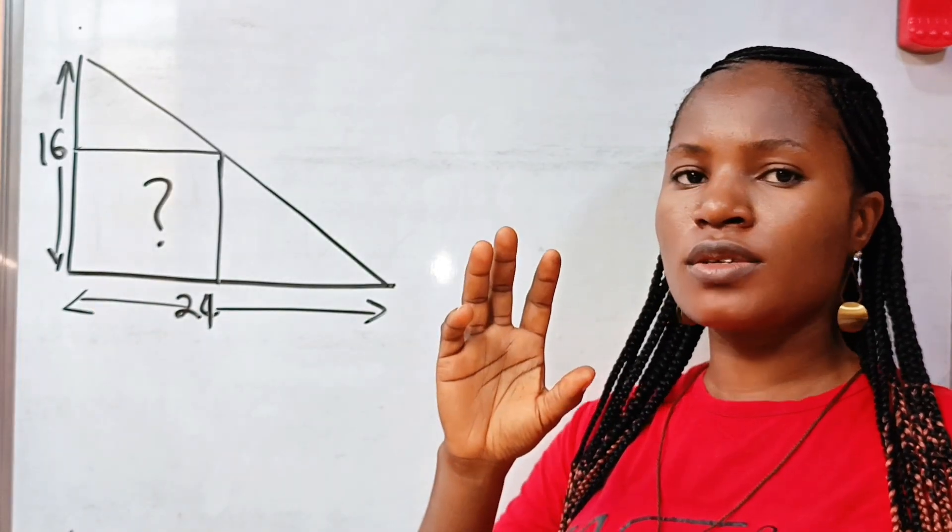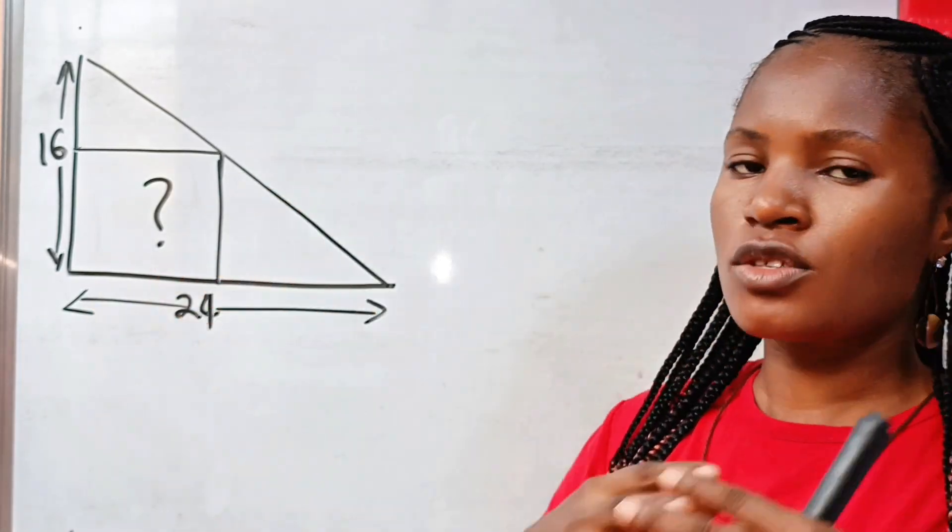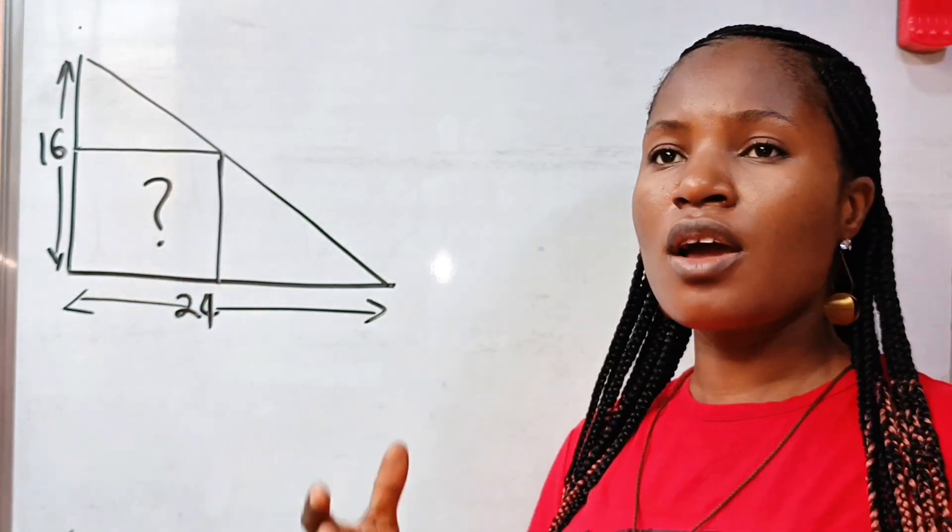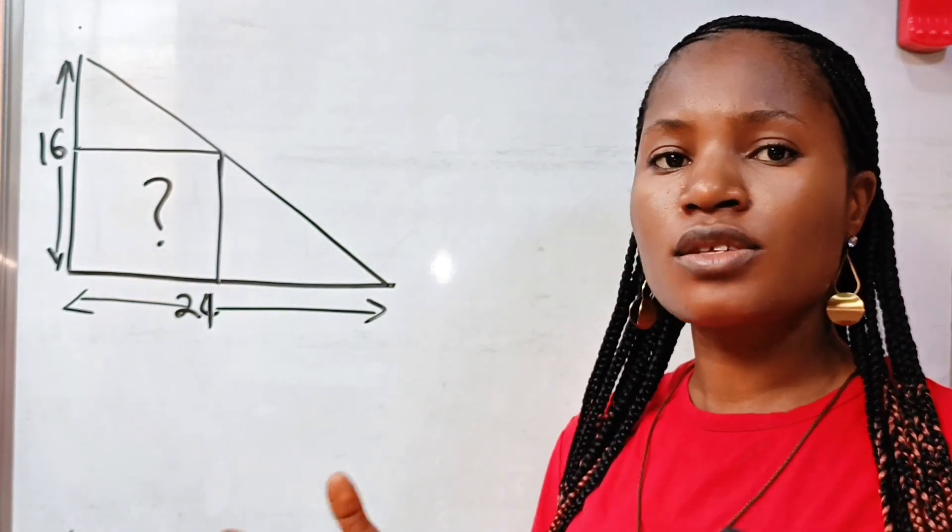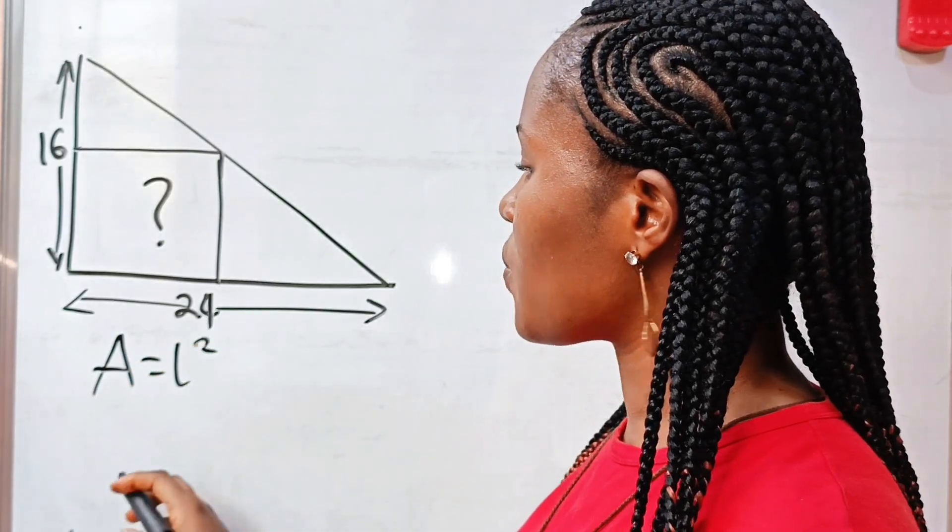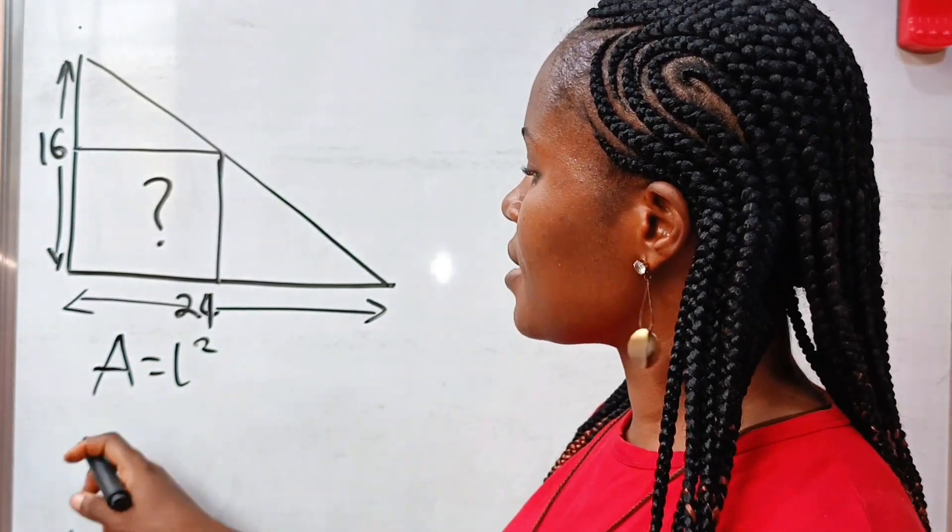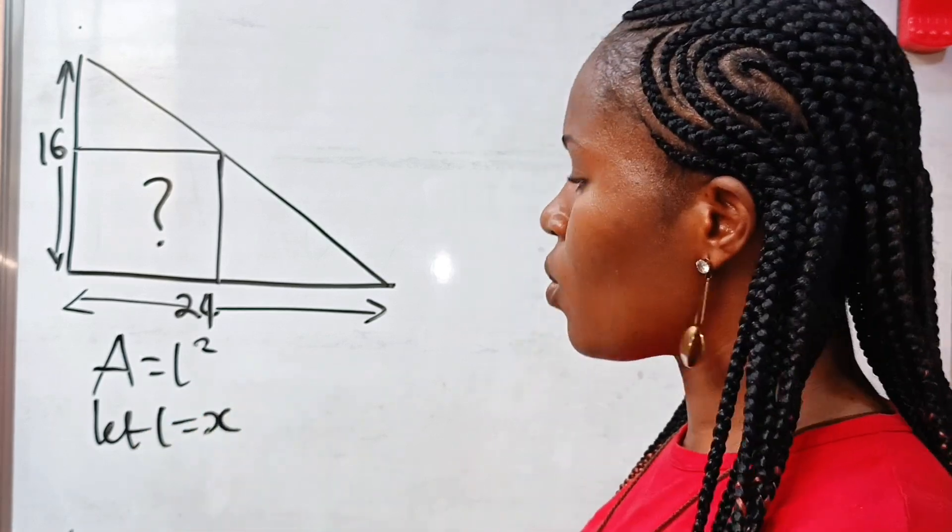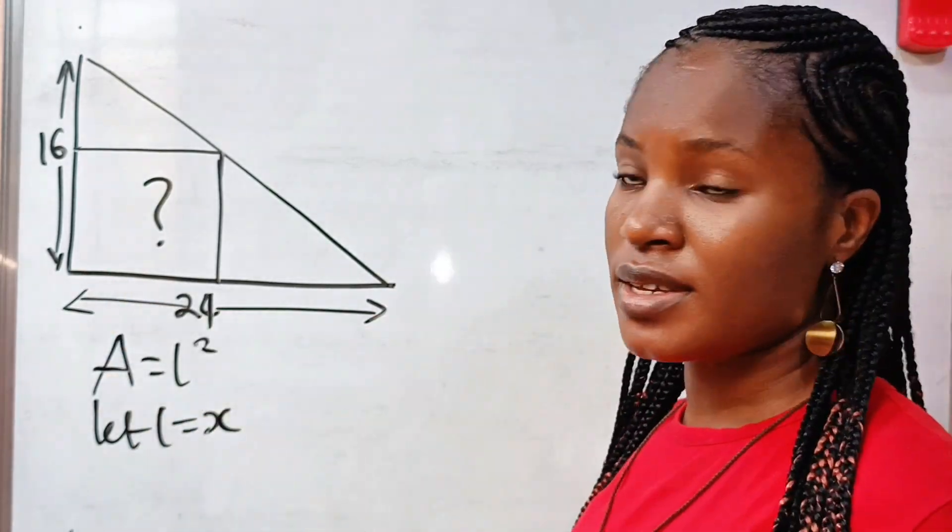Now, we are going to start from what we are asked to do. We are asked to find the area of this square. An area of a square is length squared, right? So first of all, our area is equal to length squared. Now, let's let our L be equal to X. So the length of this square, let's call it X.